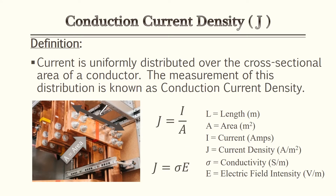A term associated with conductivity and resistivity is conduction current density. When a current is uniformly distributed over a cross-sectional area, the measurement of that distribution is conduction current density, represented by the letter J. So if you have a very thin wire with a lot of current going through it, it has a very dense current density because you're putting all that current through that tiny wire.